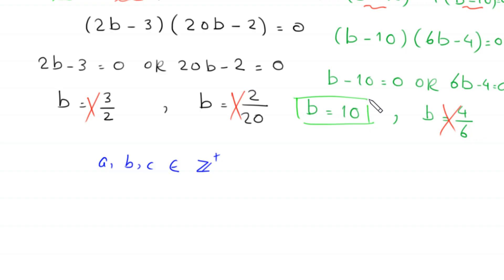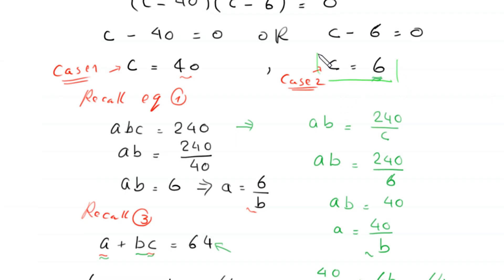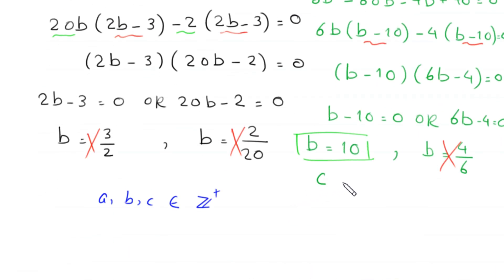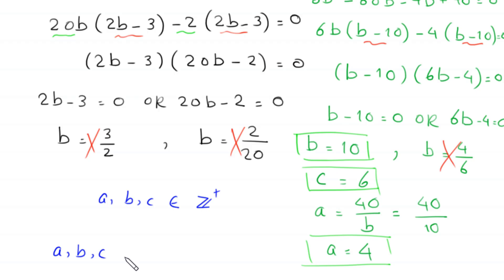Now we have B equals 10 and C equals 6. To find the value of A, we use the equation A equals 40 over B, which gives A equals 40 over 10, so A equals 4. Therefore, from Case 2 we get A equals 4, B equals 10, and C equals 6. The final solution is (A, B, C) equals (4, 10, 6).